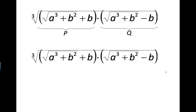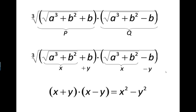Now the second thing to note is that the square root of a cube plus b square is x and b is y, and there we have x plus y. And here we again have x, the square root of a cube plus b square, and minus b is really minus y. And we can use the expression x plus y times x minus y equals x squared minus y squared.